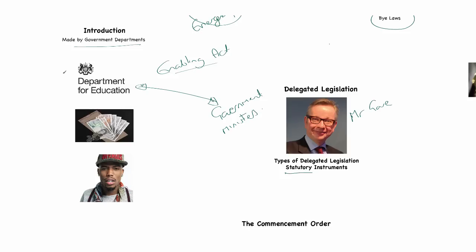It's drafted by the legal department. Each of these departments has a legal department working within them, and it will be the legal department that puts together the statutory instrument. They're often used to update the law. A good example of that would be to change fine levels for a criminal offence. As society moves on and it is decided to increase or decrease the fine levels for a particular offence — either because society deems that offence to be less serious or more serious — a statutory instrument is often the way in which that process is carried out.